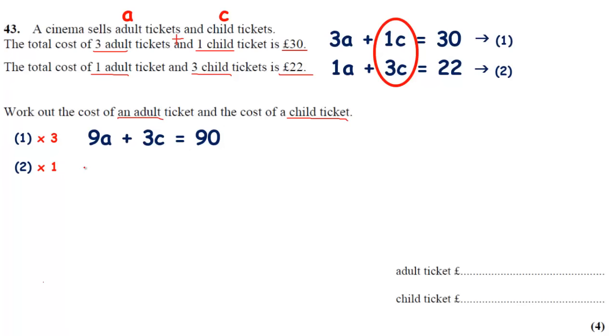The second equation we're going to times it by 1, which means it's going to stay the same. Now we've got the Cs the same, identical. It's 3C and 3C.